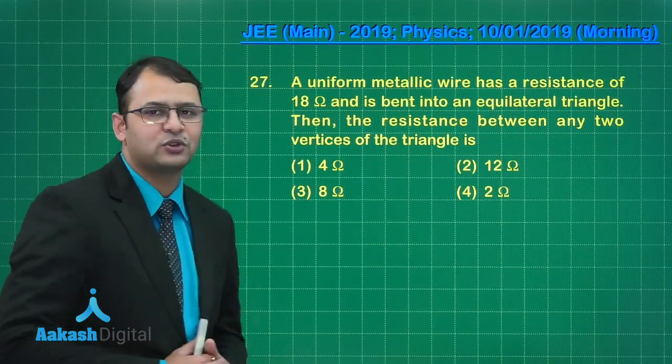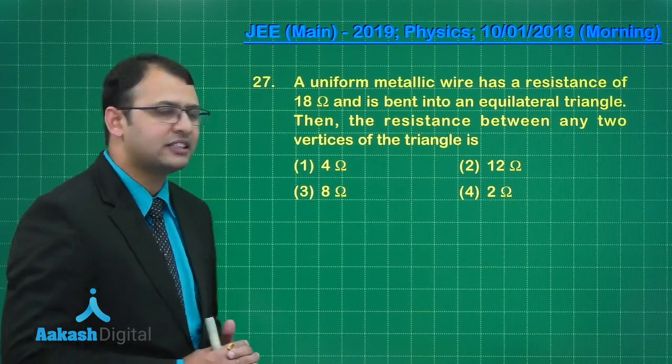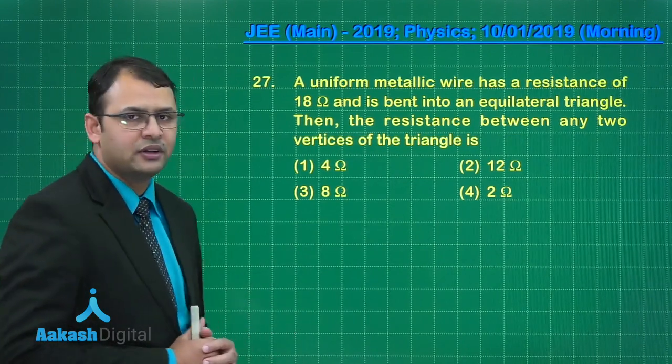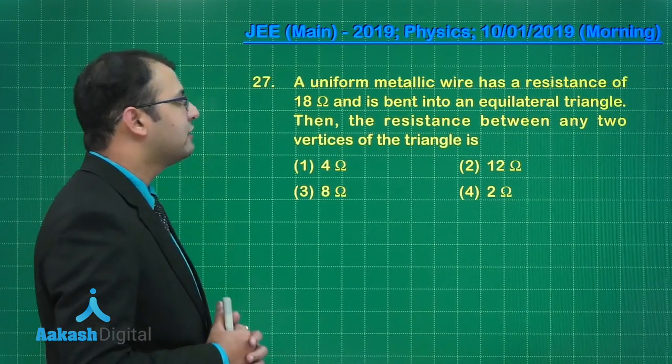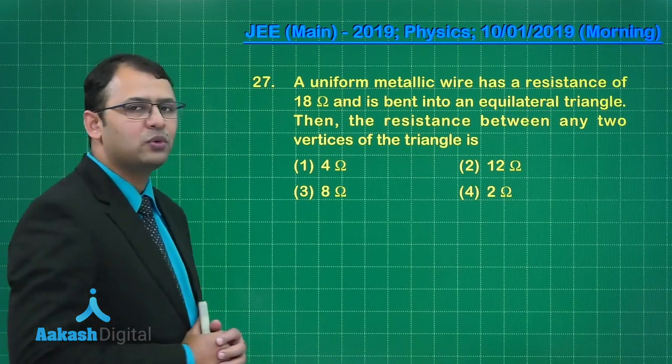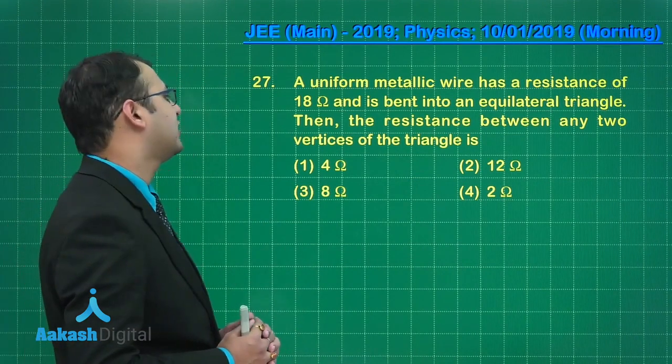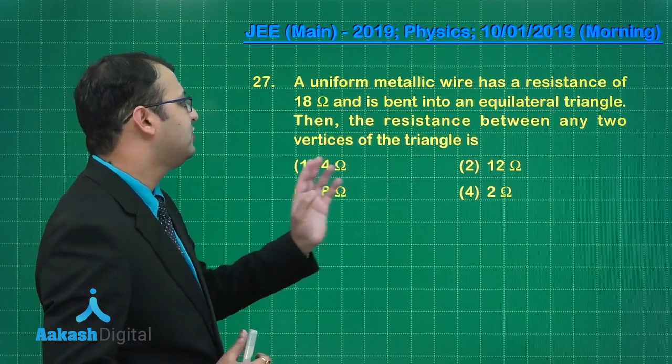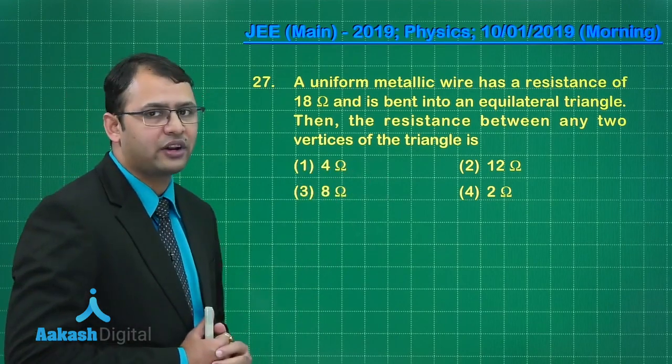This question belongs to chapter current electricity and section of electromagnetism. As per the question, a uniform metallic wire has a resistance of 18 ohm and is bent into an equilateral triangle. Then the resistance between any two vertices of triangle is...